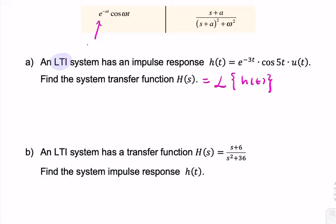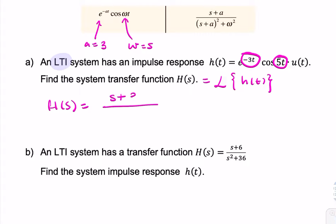So we can say A equals 3 and omega equals 5. Therefore H of S will be S plus 3, divided by S plus 3 squared plus 5 squared — and we can rewrite that as S plus 3 over S plus 3 squared plus 25. And that would be the transfer function H of S.